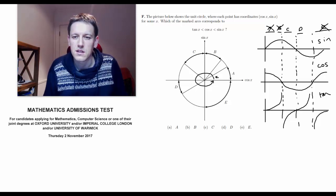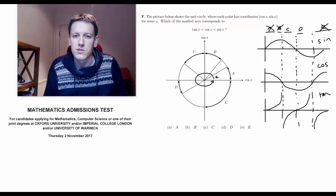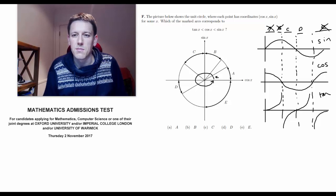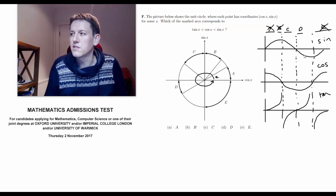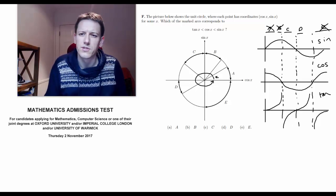Tan θ goes to minus infinity in this region C, so it's going to be smaller than cos θ plausibly there. But for D, tan θ is positive and sin and cos are both negative, so that one doesn't work.